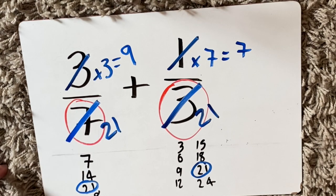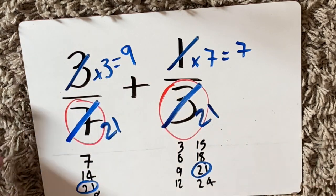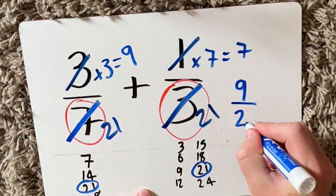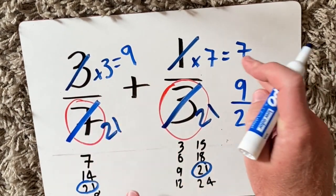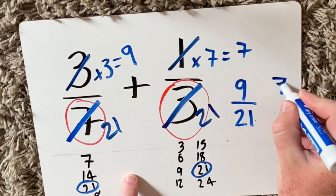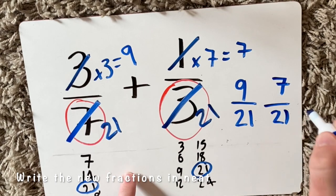So now what you'll see is this fraction is now nine twenty-firsts, and I'm going to write it over here. And this one is seven twenty-firsts.